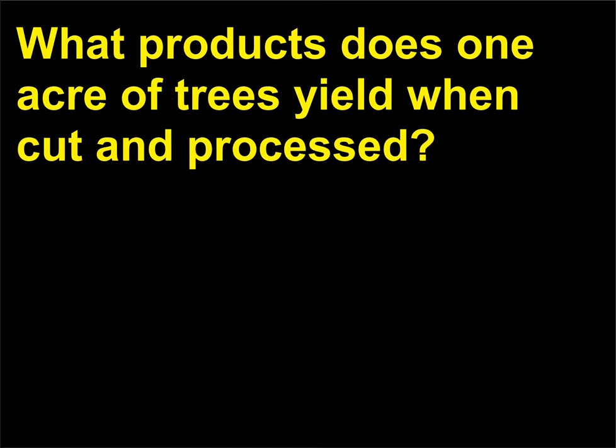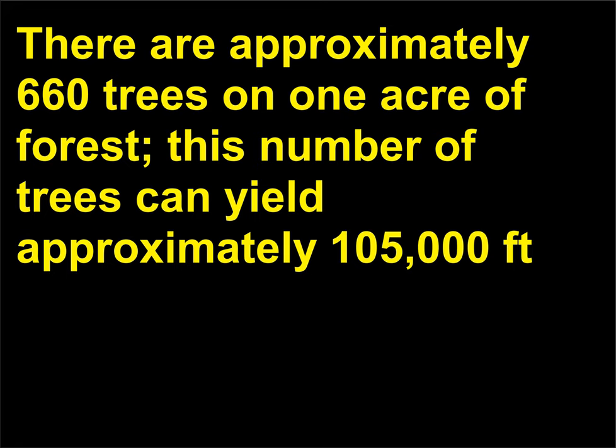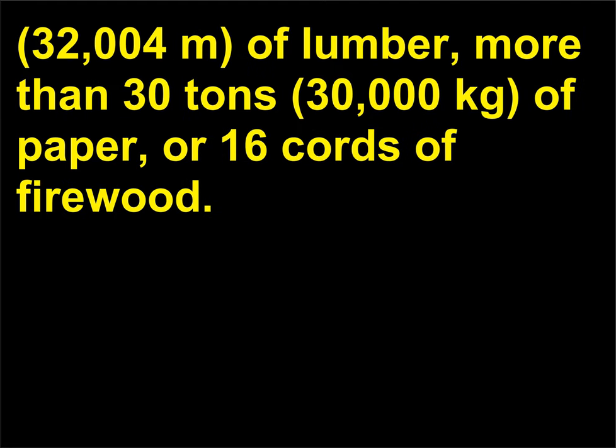What products does one acre of trees yield when cut and processed? This number of trees can yield approximately 105,000 feet (32,004 m) of lumber, more than 30 tons (30,000 kilograms) of paper, or 16 cords of firewood.